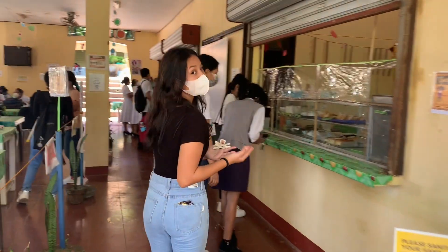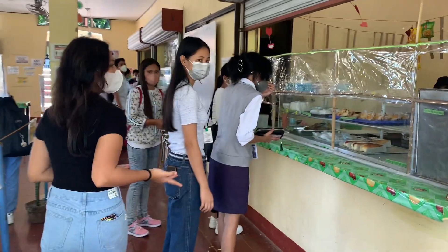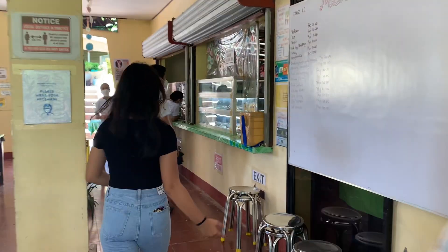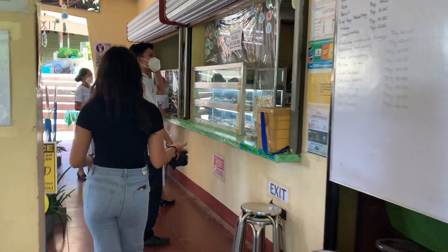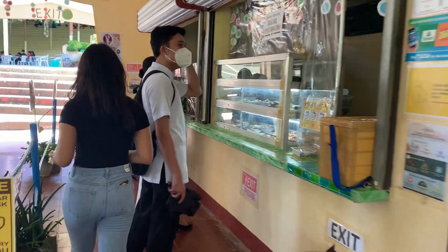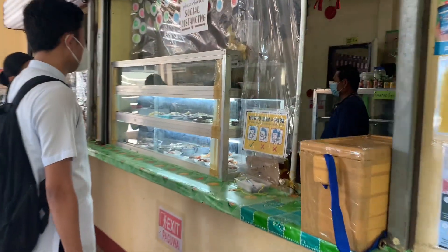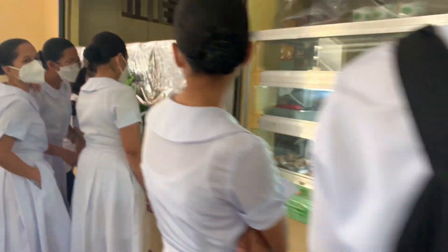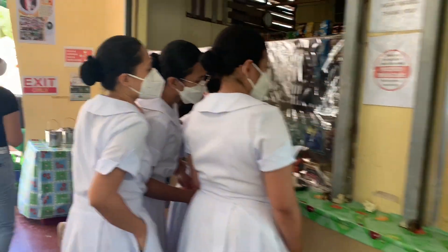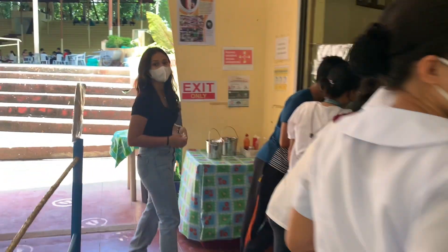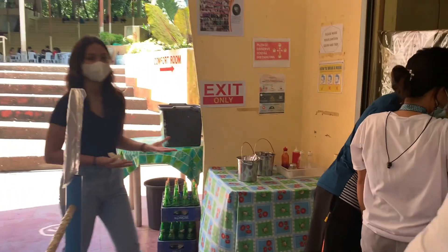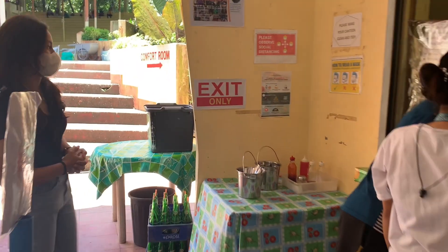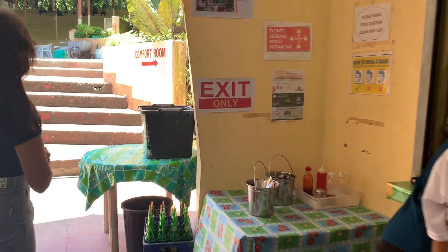The cafeteria functions as the vacuole on the campus because this is where the various foods and beverages are kept. Additionally, there are trash cans with labels for students to put their waste in, which will be removed soon by the canteen personnel.